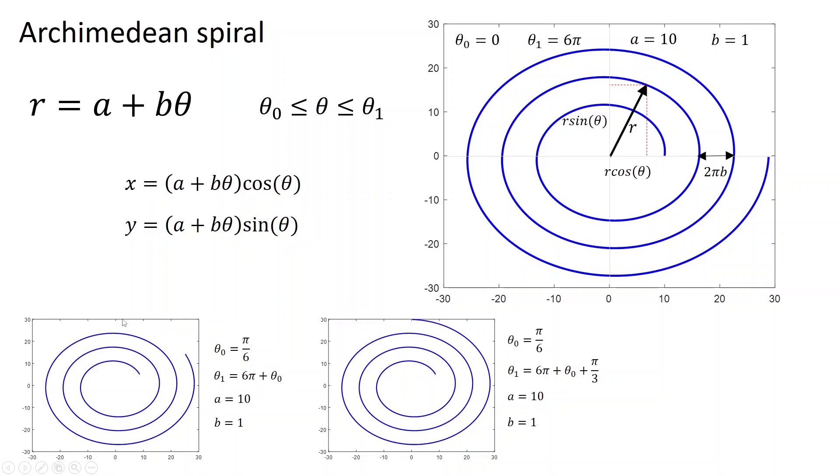If you want to make the end a little bit stretched, then you can add another phase to that. This is basically how you can make a normal and simple Archimedean spiral.